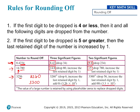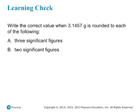So there are a couple of tricky situations that can come up when you're rounding. Now that we've gone over those examples, let's do a learning check. Write the correct value when 3.1457 grams is rounded to each of the following: in A, round to three sig figs, and in B, round to two sig figs. Feel free to pause the video and try this on your own, and when you unpause, we'll go over it together.